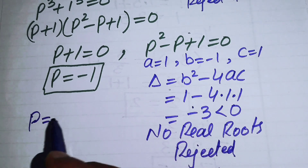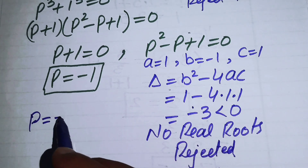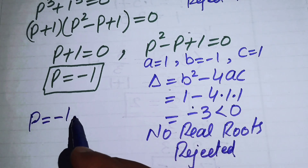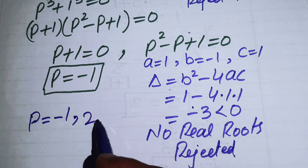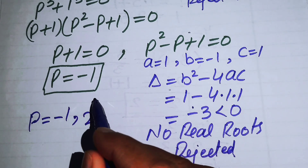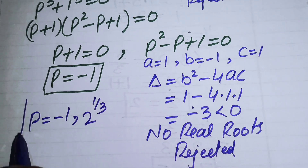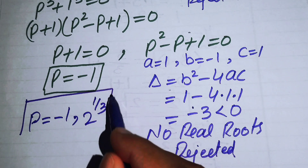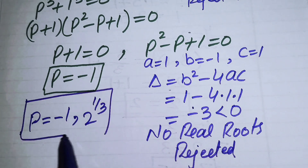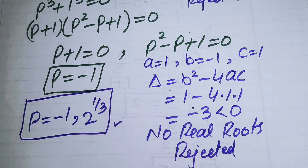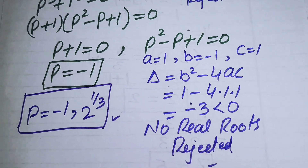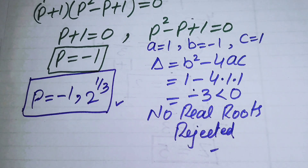Finally, the two real solutions of this problem are p = −1 and p = 2^(1/3). Thank you so much for watching this video. Please subscribe to my channel for more exciting videos.